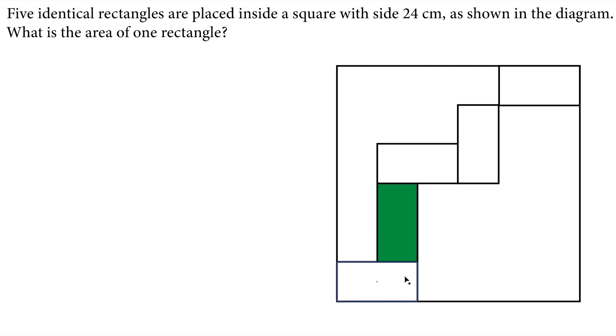Hi there. In this video, we will solve this Math Olympiad question. Let's read the question. Five identical rectangles are placed inside a square with side 24 centimeter as shown in the diagram. What is the area of one rectangle?